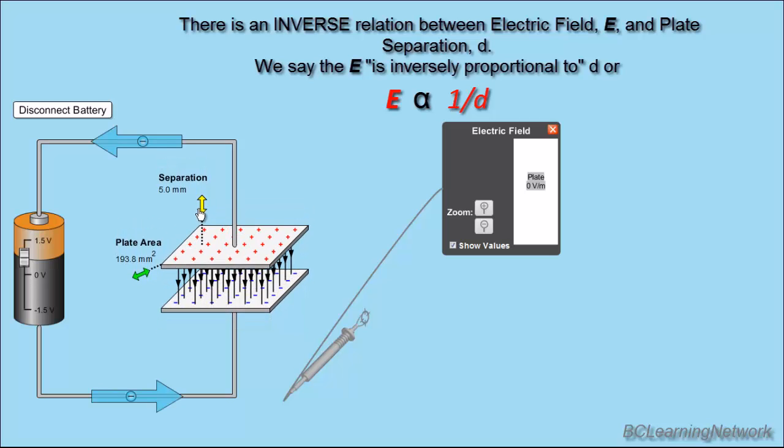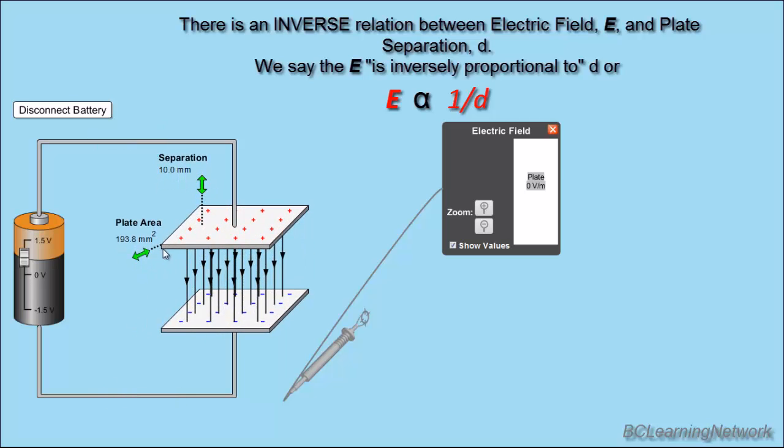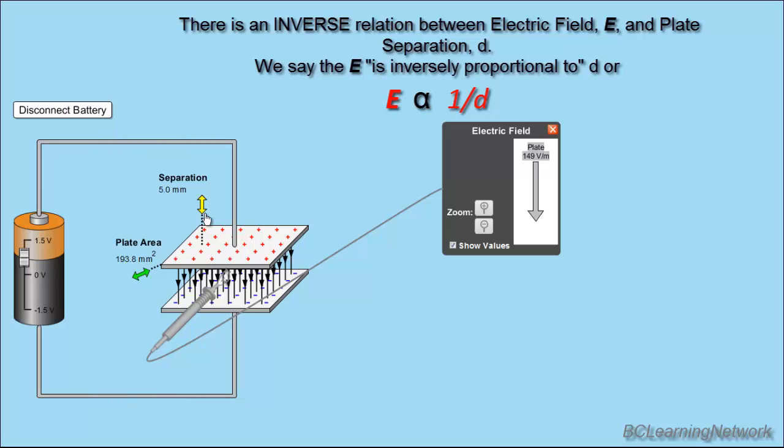Now, that should make sense. If the plates are closer together, the negatives on the bottom plate are closer to the positives on the top and they're able to exert more force. So, you're going to basically suck more charges onto that top plate because these negatives are so nearby. They're going to really be able to pull hard and pile them up on that plate. Whereas, as we get further and further away, because the force varies with distance, the force gets weaker and our electric field, in turn, gets weaker. And, we can see that with our meter. As we're far away, our electric field is 74 volts per meter. And, as I get closer and closer together, my electric field goes all the way up to 149 volts per meter. So, inverse relationship between electric field and plate separation.